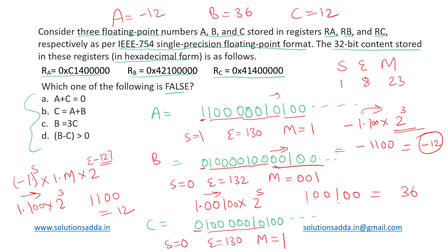Now depending on this, let us look at the options. A plus C equal to 0: minus 12 plus 12 is 0, so this is true. Option B: C equal to A plus B. 12 is minus 12 plus 36? No, this is incorrect. It is actually 24. So this is false and it will be our answer because we are asked for false.